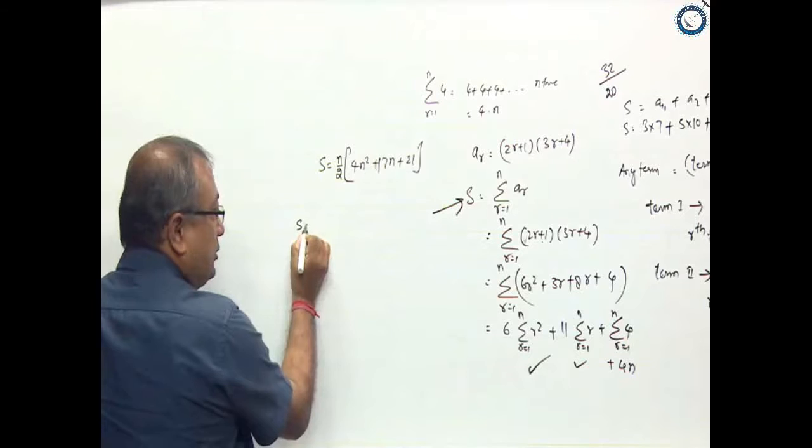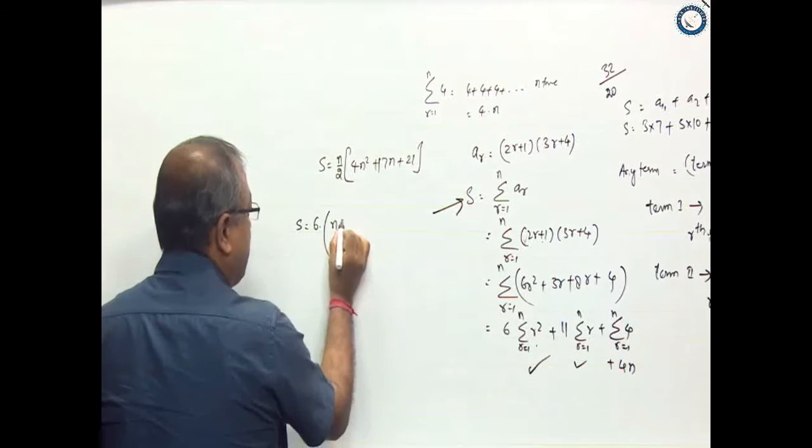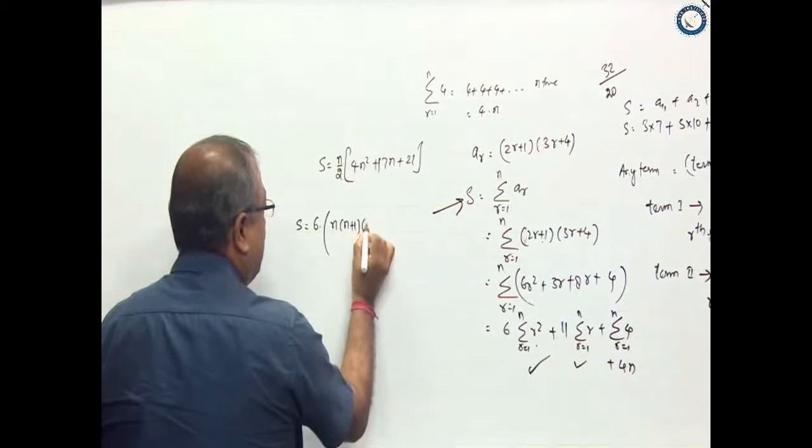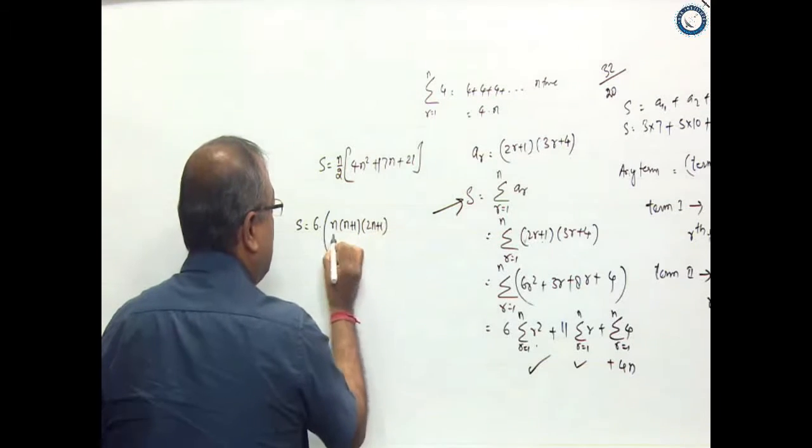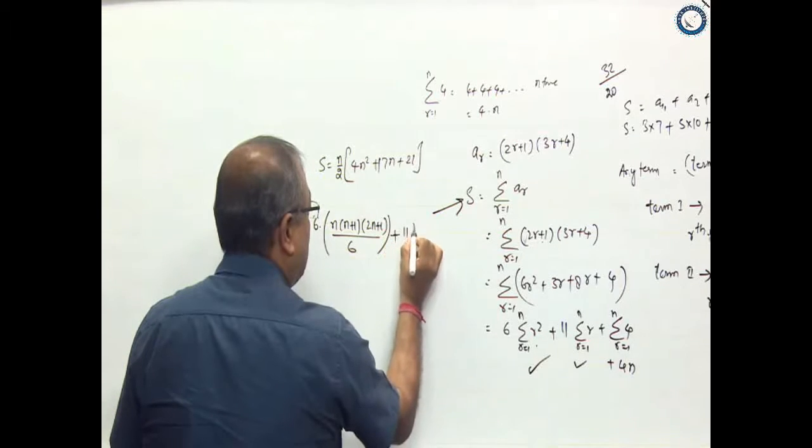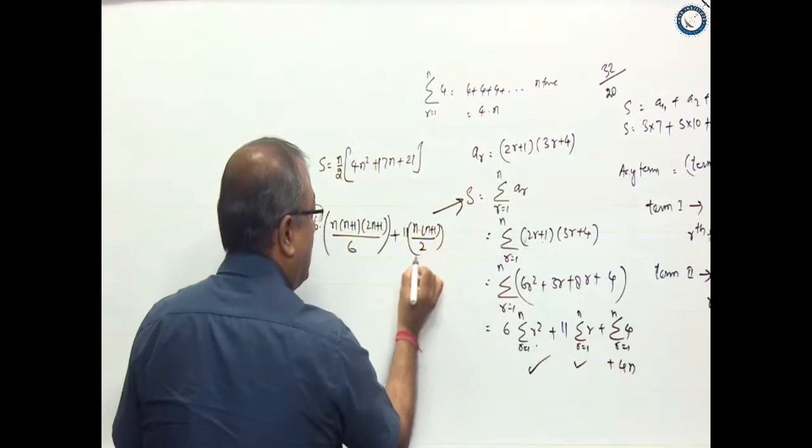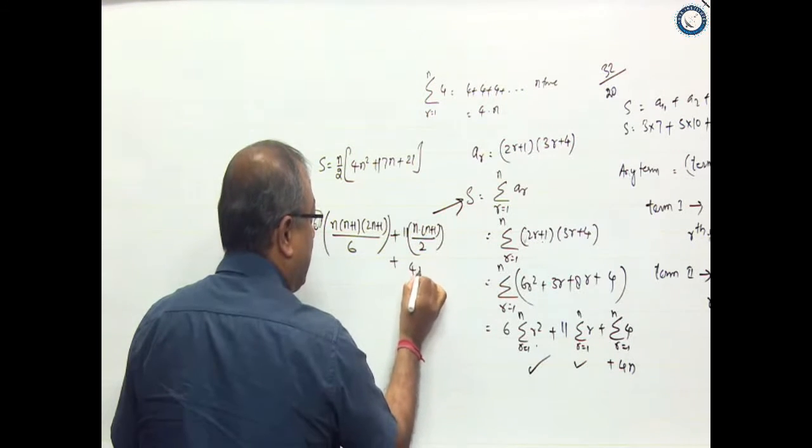Let us say S equals 6 sigma r², which is n(n+1)(2n+1)/6 plus 11 times n(n+1)/2 plus 4n.